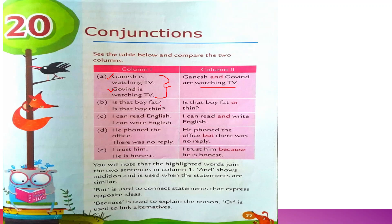Number B: 'Is that boy fat? Is that boy thin?' — joined as 'Is that boy fat or thin?' When we are giving a choice or alternatives, we use 'or.' 'And' is used to join similar statements or ideas. 'Or' is used to suggest choices or alternatives — when we are giving options, ideas, or choices, then we use 'or.'